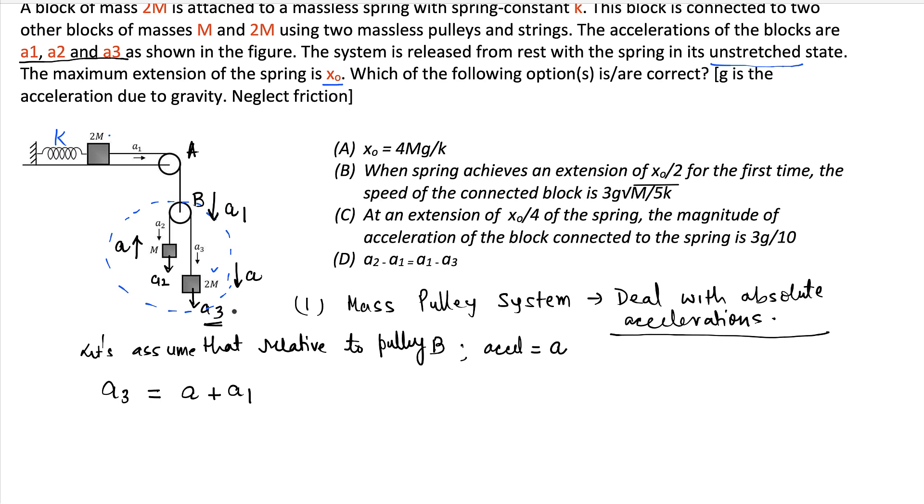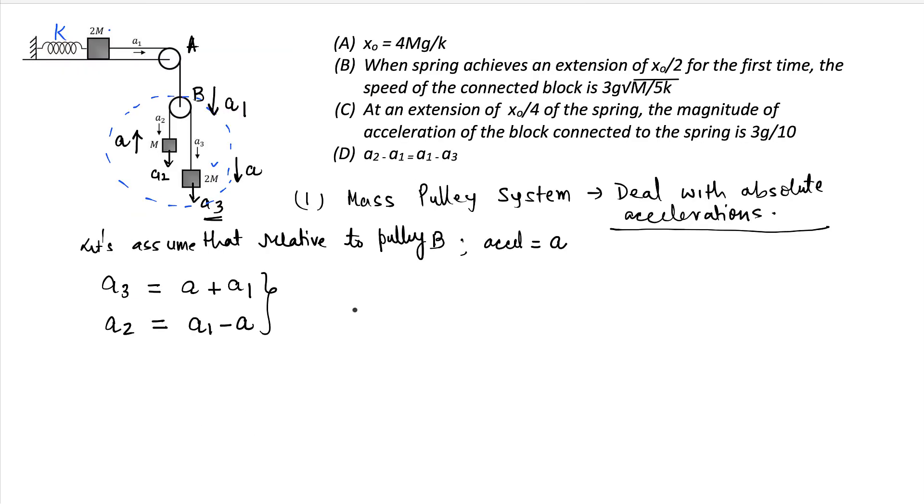So A3 is A plus A1. You could see that because this guy is going down with A, this pulley is going down with A1. Overall, the mass 2M is going down with A plus A1. What about this guy? It is given that A2 is downwards as indicated in the figure. So the acceleration downwards should be A1 minus A because this mass is going up by A. Now, if you can rearrange this, then you will get A2 minus A1 as minus A from here, and also A1 minus A3 you will get minus A, which means A2 minus A1 is equal to A1 minus A3. So which means D is the right answer. So D is definitely the answer.